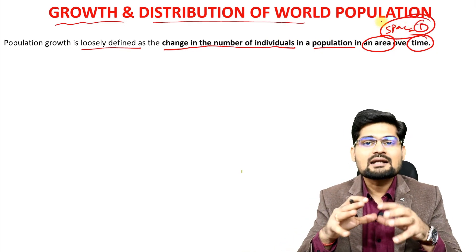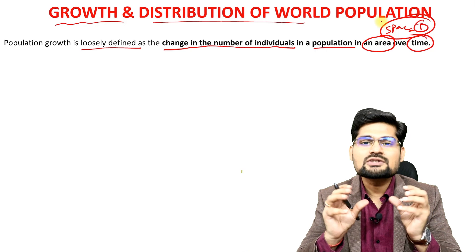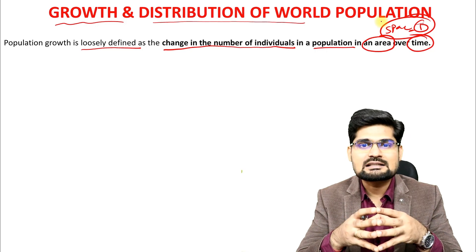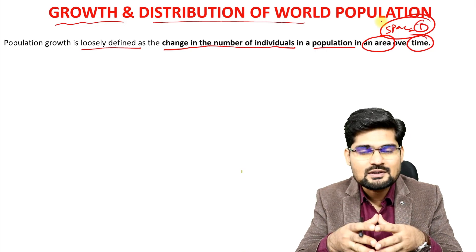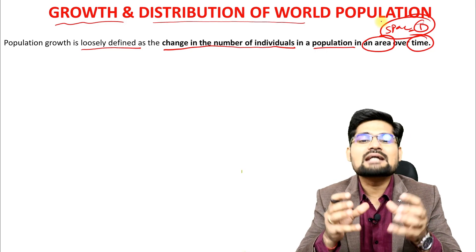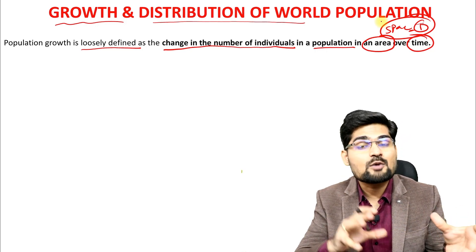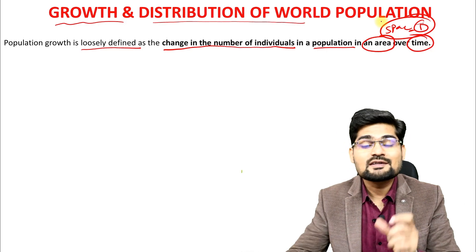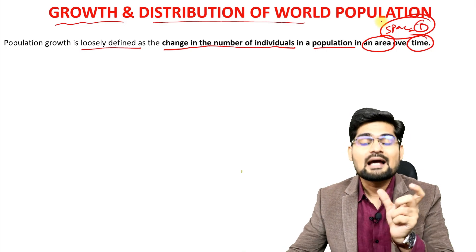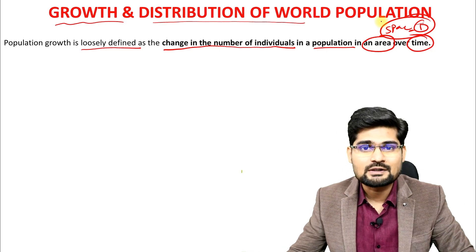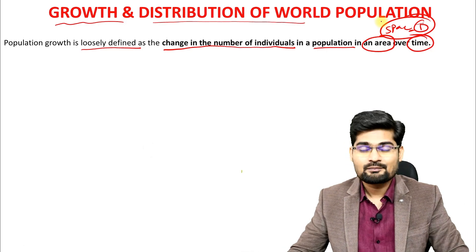Population growth is loosely defined as the change in number of individuals in a population over an area over time. Here, space and time are the key considerations. When we say population geography, the spatial and temporal components are important.